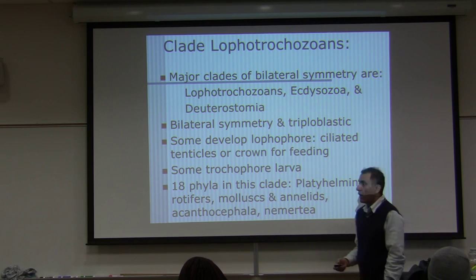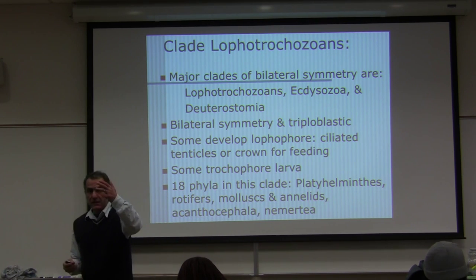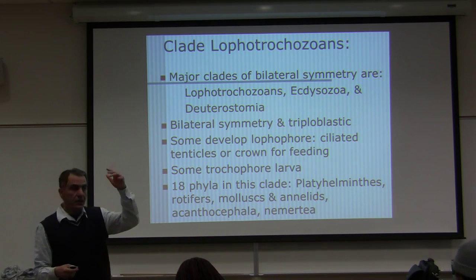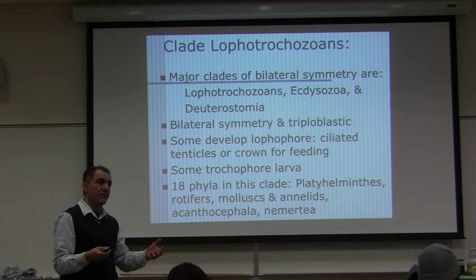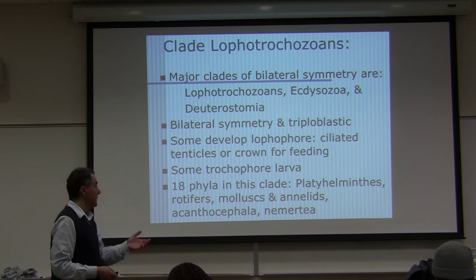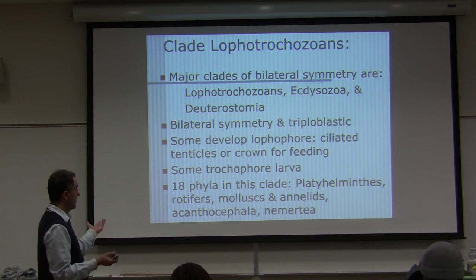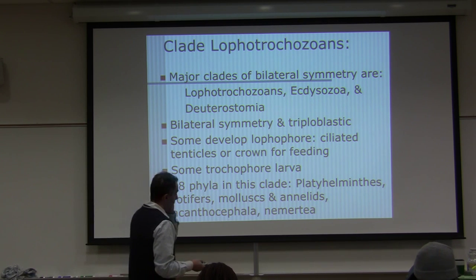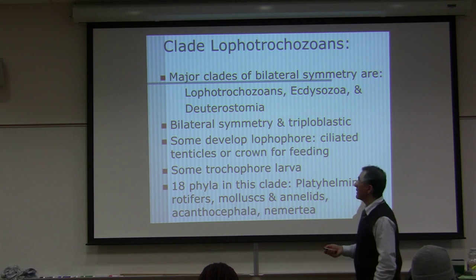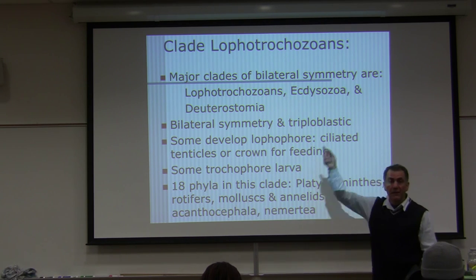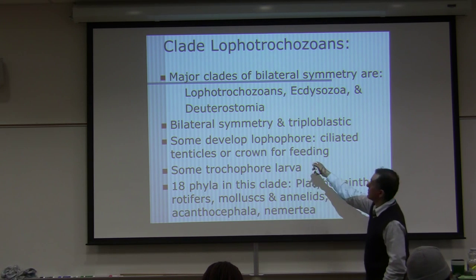Under the grades there are clades, and under the clades there is a phylum. I made a PowerPoint slide of these things — it will make sense with that diagram. The major clades of bilateral symmetry are Lophotrochozoa, Ecdysozoa, and Deuterostomia.